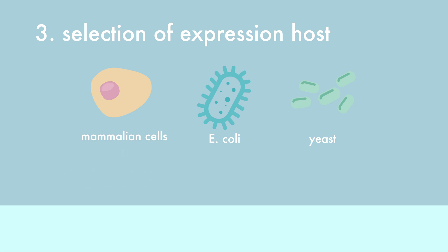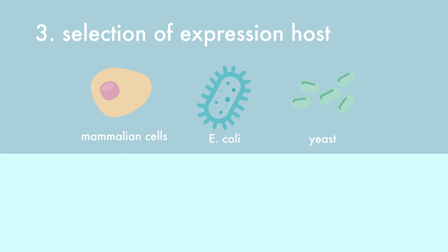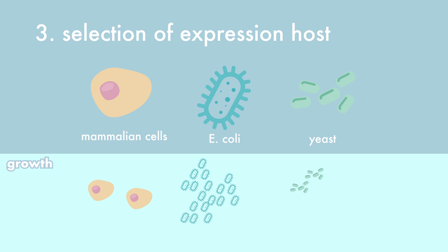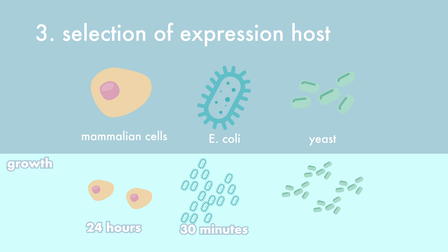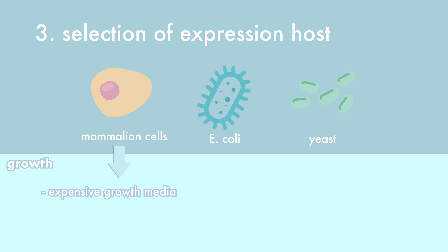An important factor for the choice of the expression host is the growth rate. Mammalian cells are much more difficult to culture than bacteria or yeast. On average, mammalian cells divide only once every 24 hours, while cell division in E. coli takes 30 minutes and in yeast 1 hour. In addition, mammalian cells need expensive growth media and in many cases bovine serum as a source of growth factors.